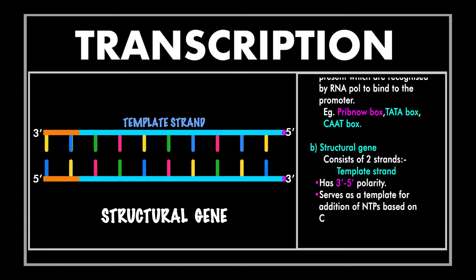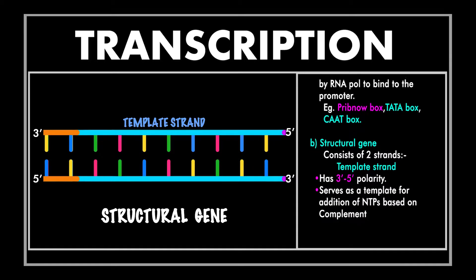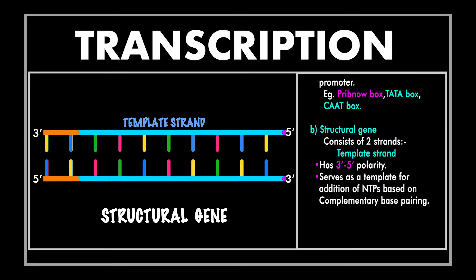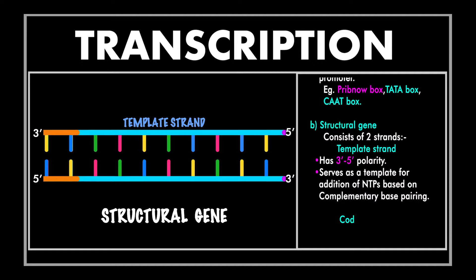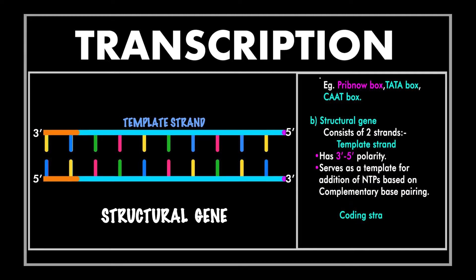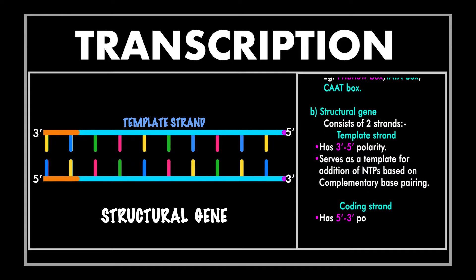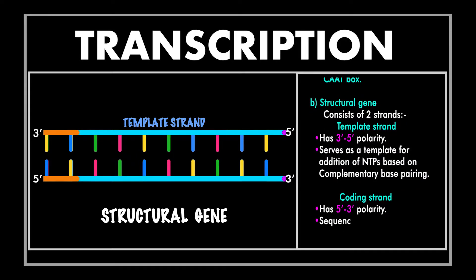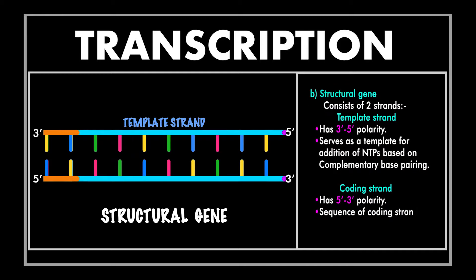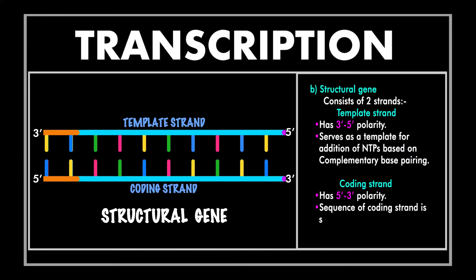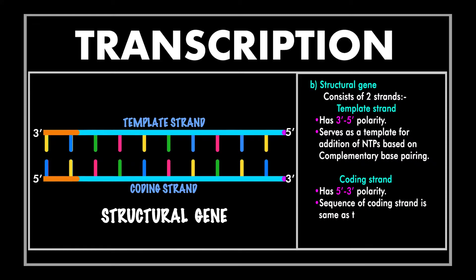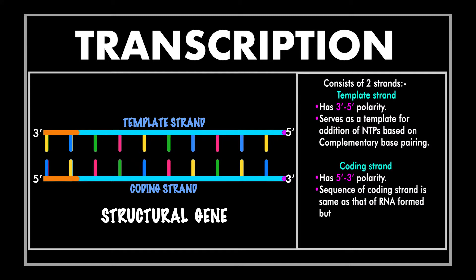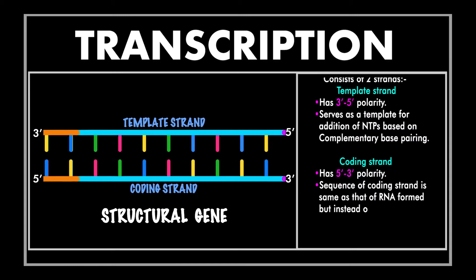New nucleotides are added for RNA formation in the five prime to three prime direction based on complementary base pairing, using the sequence of the non-coding strand as a template. Hence this strand is also called the template strand.